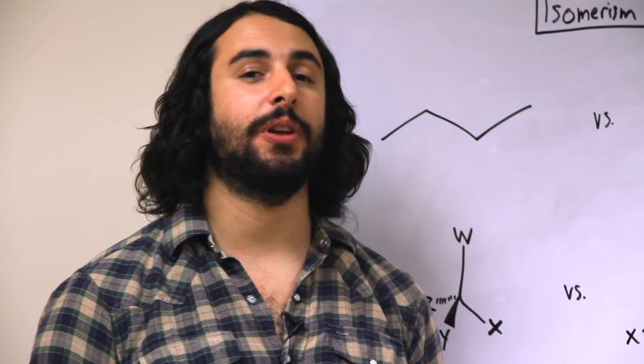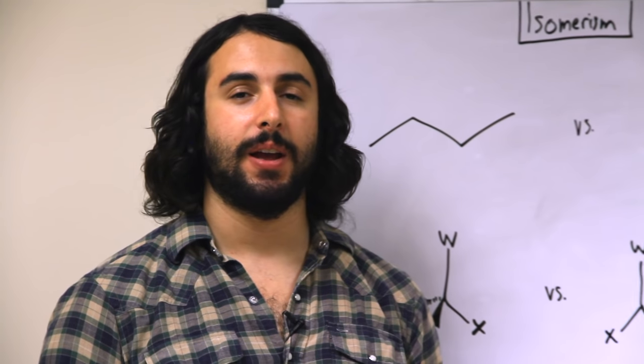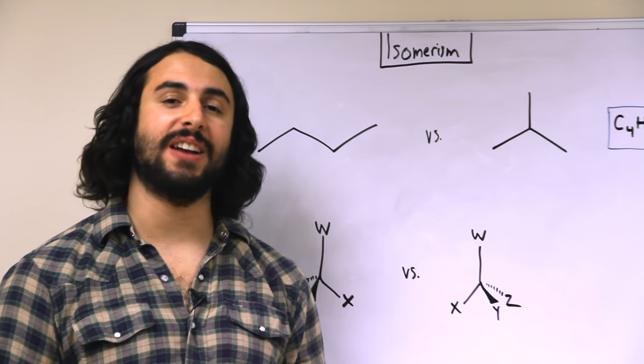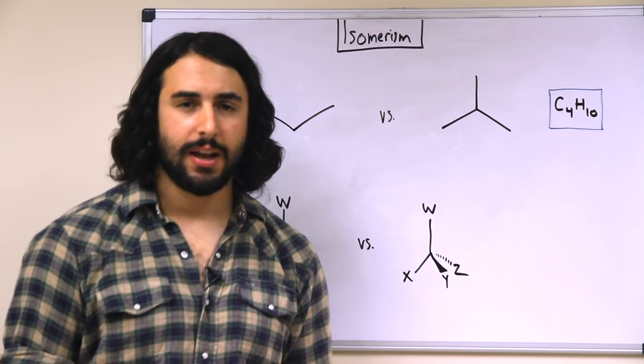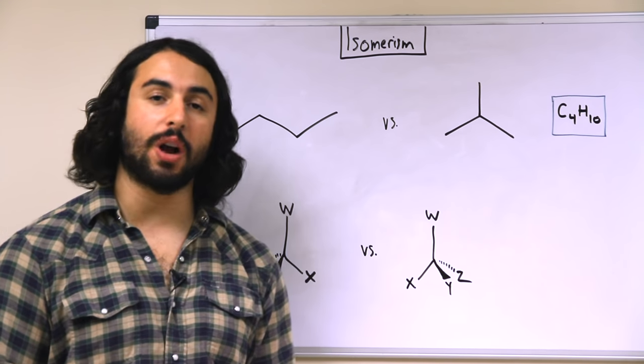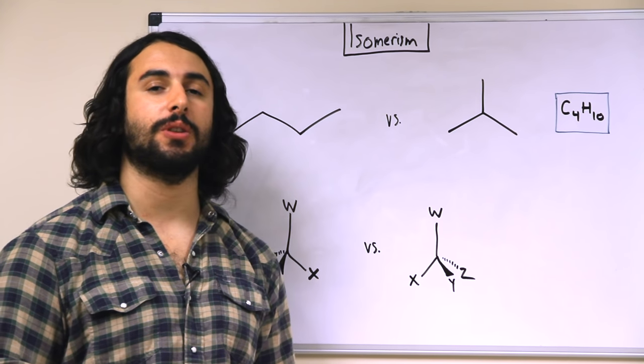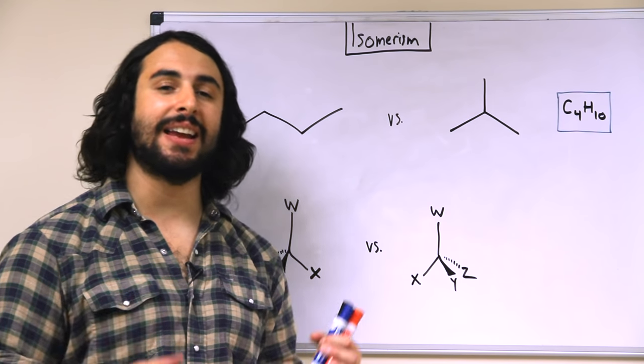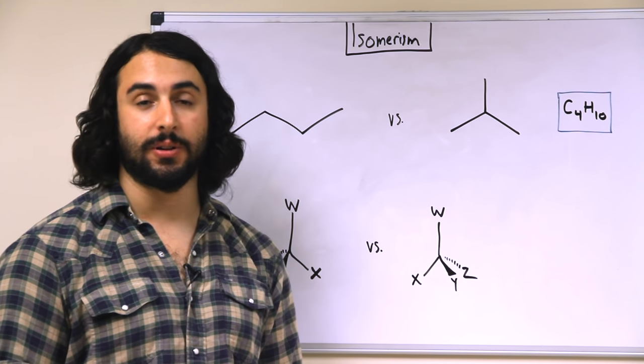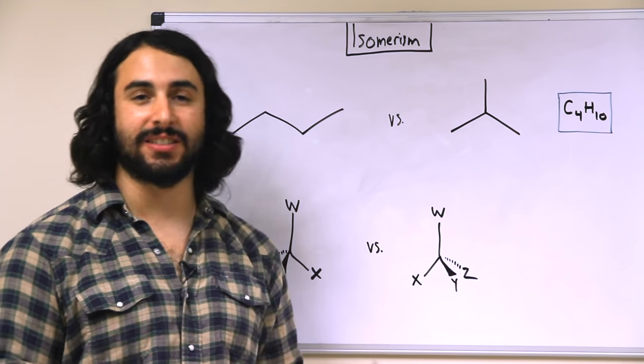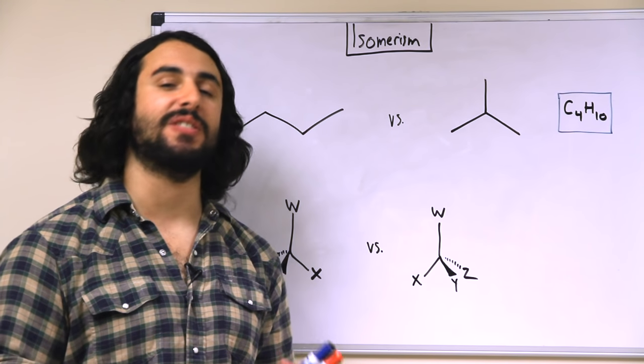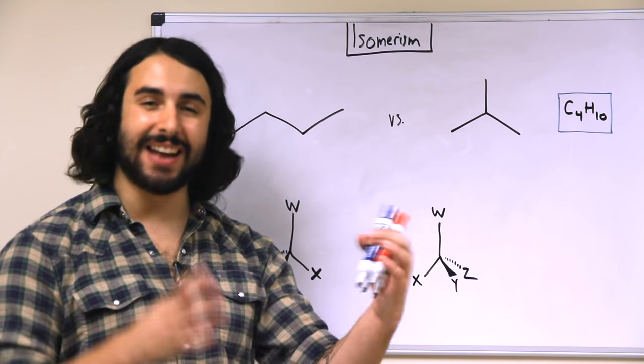So we're probably familiar with the term isomerism and understand a little bit about what isomers are. But there's different kinds, and we may recall what structural isomers are. Structural isomers are molecules that contain the same molecular formula but differ in connectivity. In other words, the same number of the same types of atoms but connected differently.